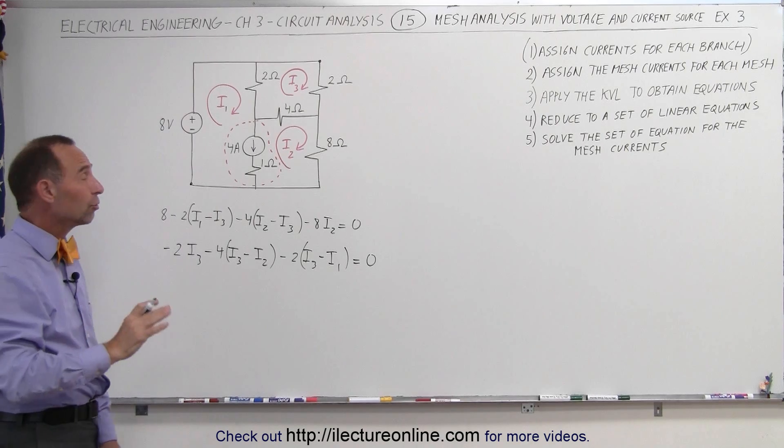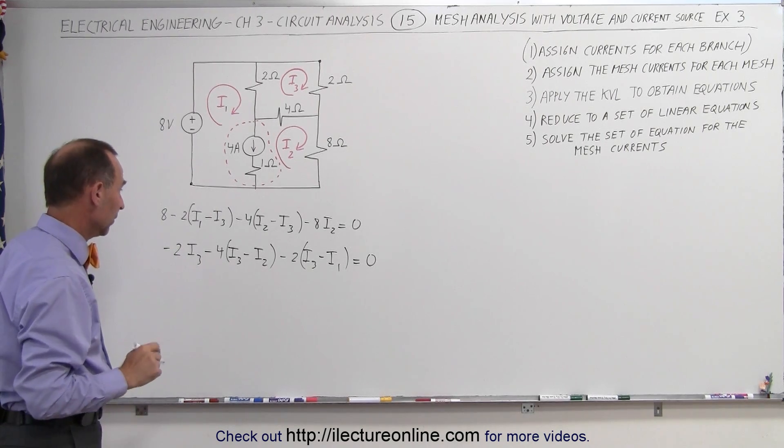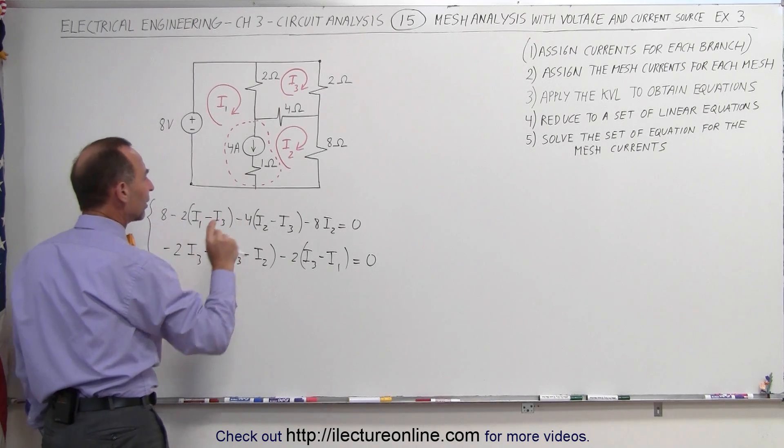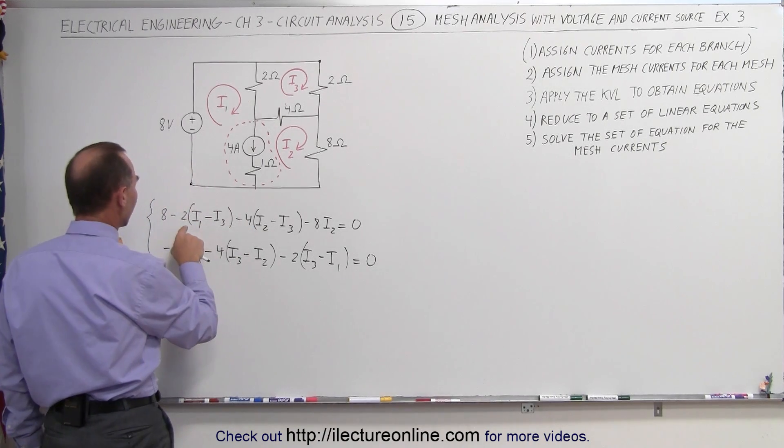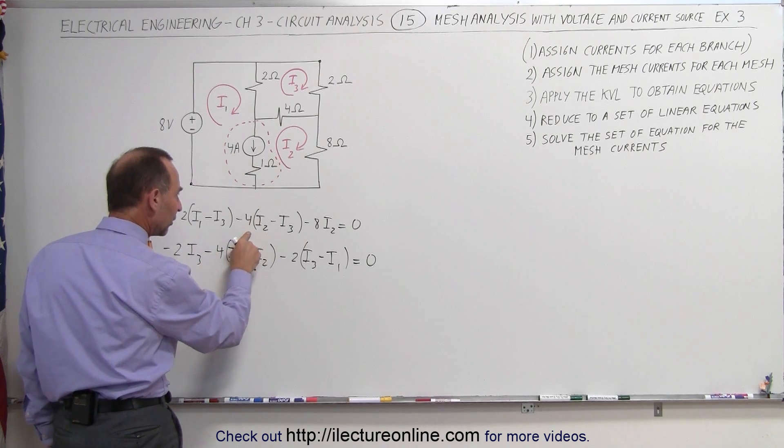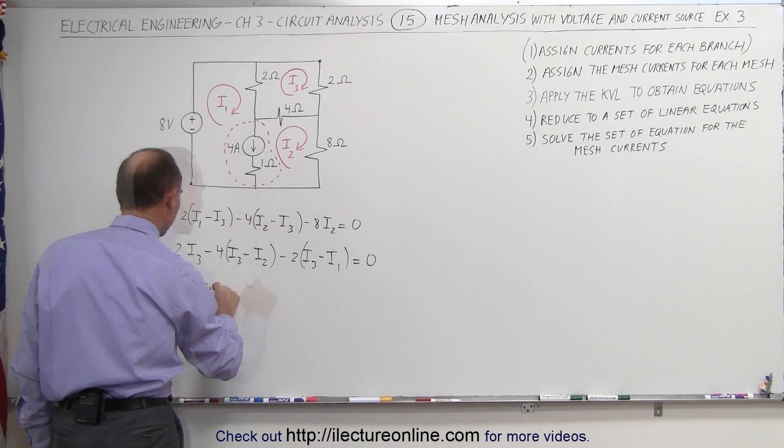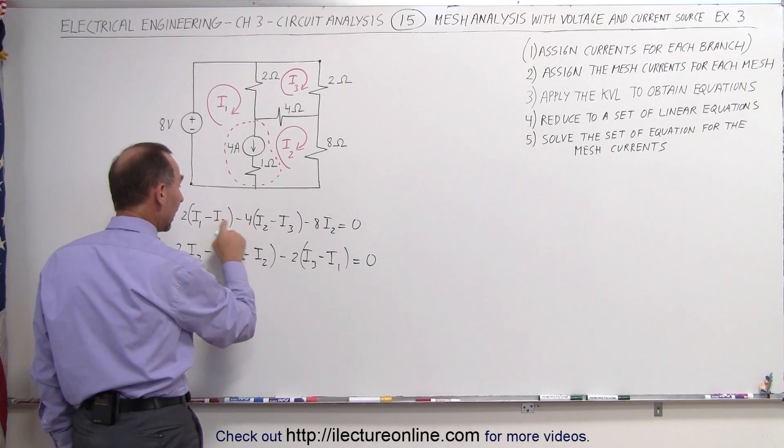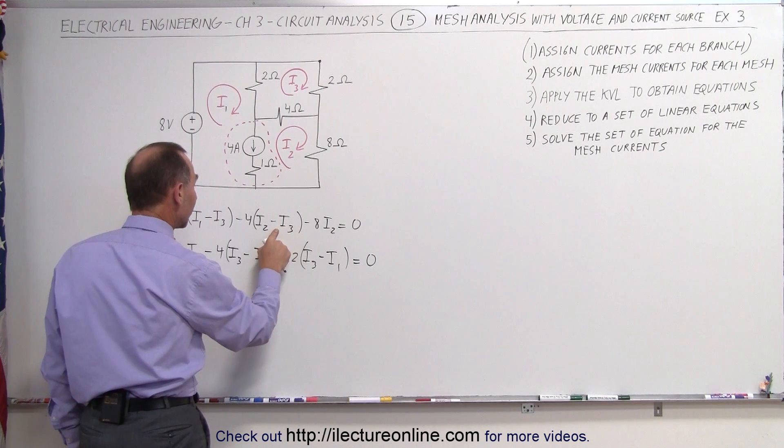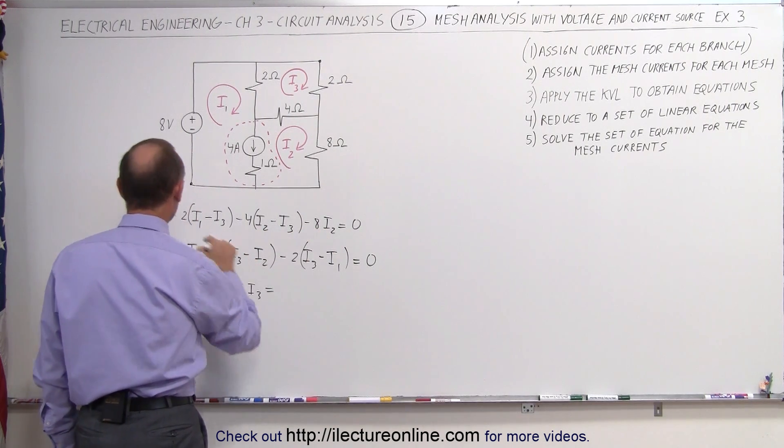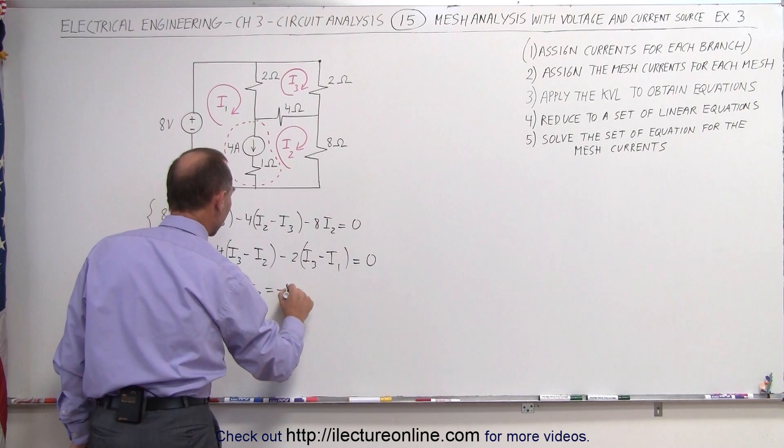I know we have three unknowns, but we'll get the third unknown in just a moment. Let's simplify these two equations by having only I1, I2, and I3 expressed once. We have a minus 2I1, a minus 4I2 and a minus 8I2, that's a minus 12I2, a plus 2I3 and a plus 4I3, that's a plus 6I3. And that adds up to, we're going to bring the 8 across the other side, a minus 8.